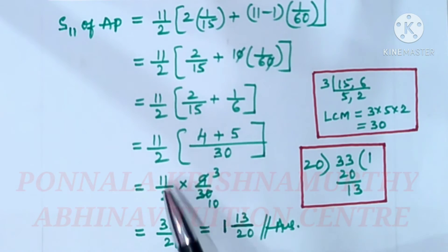This equals 11/2 times 9/30. 3, 3s are 9, 3 tens to 30. Then 11 into 3 is 33 by 2 into 10 is 20. This is 33/20.